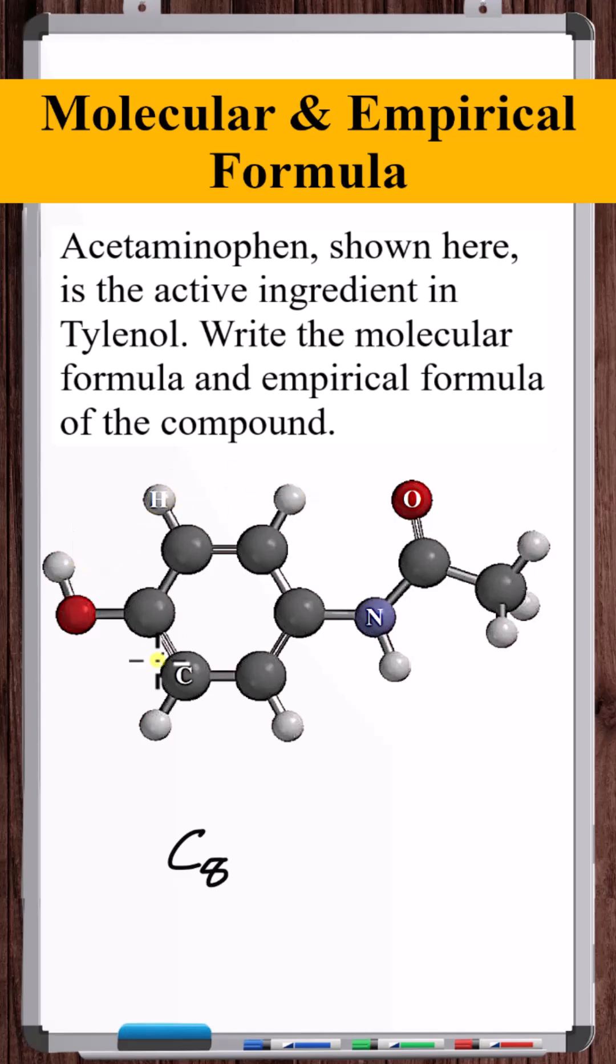Now there's 1, 2, 3, 4, 5, 6, 7, 8, 9 hydrogens. So we'll say H9. There's one nitrogen, and there's two oxygens. So that's the molecular formula of acetaminophen or Tylenol, C8H9NO2.